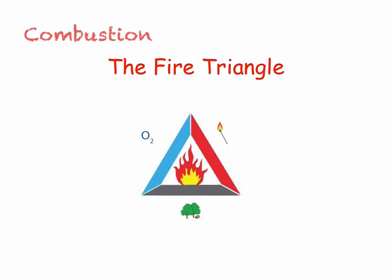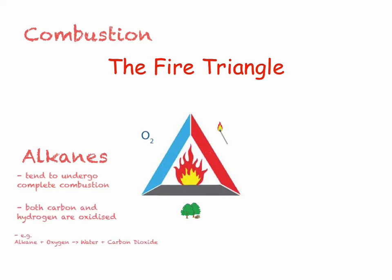The final topic we need to look at for alkenes and alkanes is combustion, which will be looked at in more detail in the atmosphere topic. In order for combustion to occur, the fire triangle must be complete — oxygen, a source of energy, and fuel. Both alkenes and alkanes can be used as this fuel. Alkanes are able to undergo both complete and incomplete combustion, though it is much more likely they will go through complete combustion. Complete combustion occurs when there is plenty of oxygen — we have our alkane, for example methane, plus oxygen, producing carbon dioxide and water.